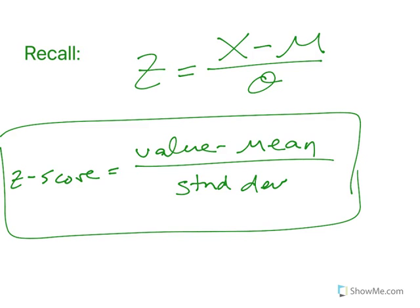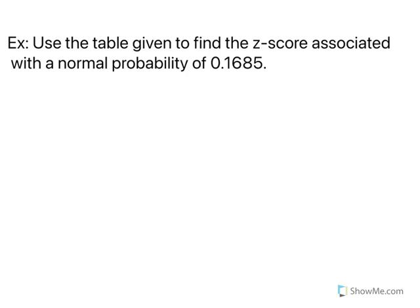So knowing this, let's go. Use the table given, it's on the next slide, to find the z-score associated with a normal probability of 0.1685.